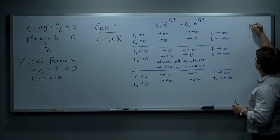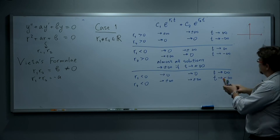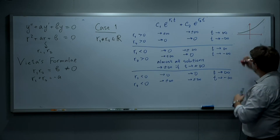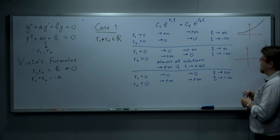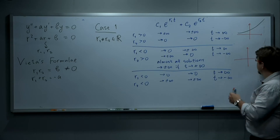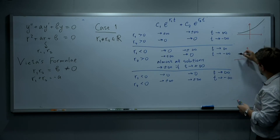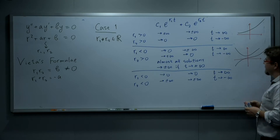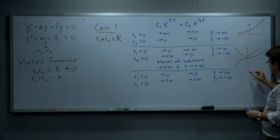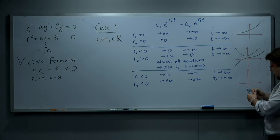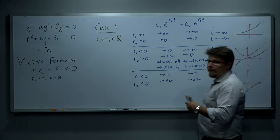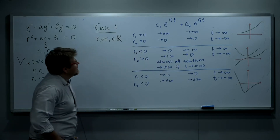A typical solution in the case of both positive roots looks like an increasing exponential function. In the case of one positive and one negative root, the typical solution is exponential for both large positive and large negative values of t — it approaches infinity on both sides. And when both roots are negative, all solutions approach zero, so a typical solution could decay toward zero.